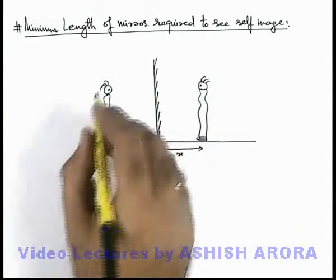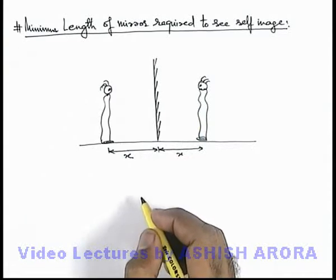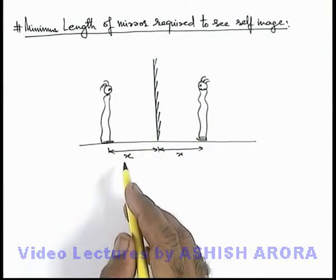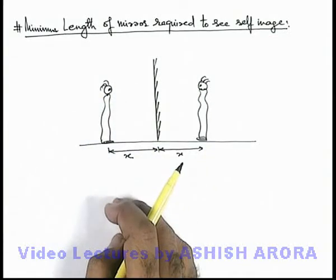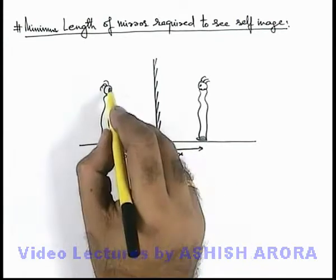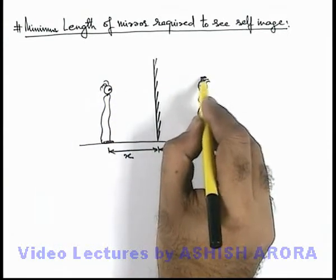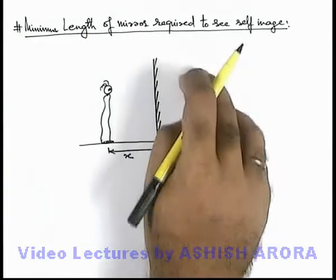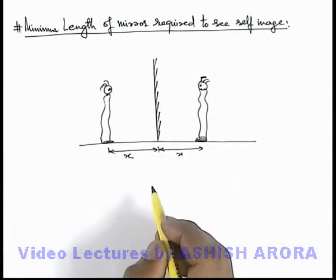In this situation, if the observer is willing to see their full image, we are required to find the minimum length of mirror needed. Obviously if the mirror is full-sized, we'll be able to see the full image. To see the complete image, in the field of view of the observer, the shoes of the image to the ears of the image must all be within the field of view of the observer.